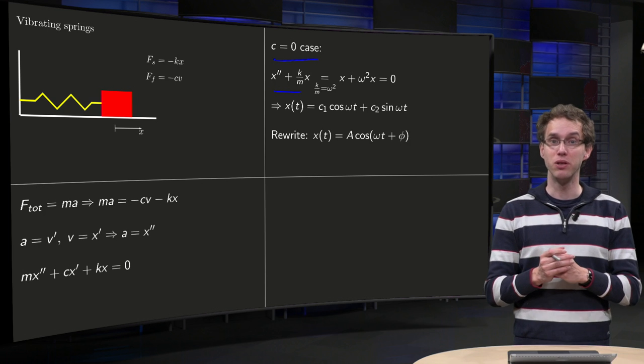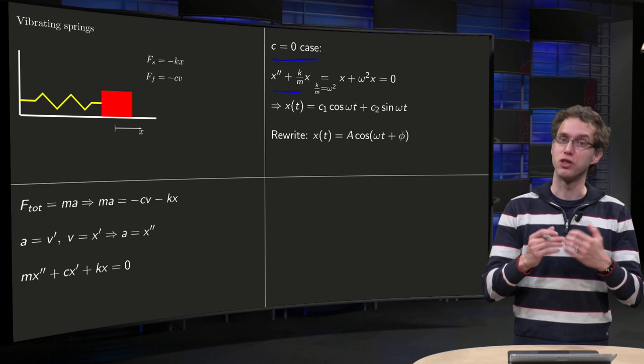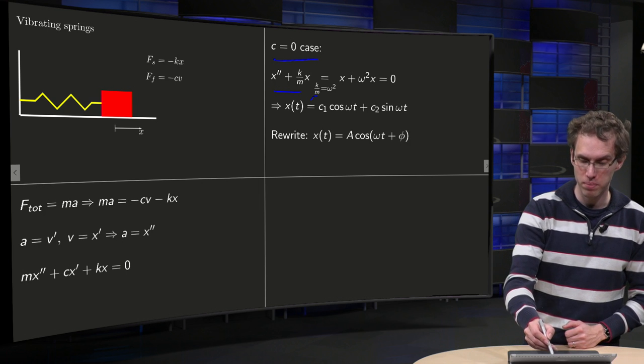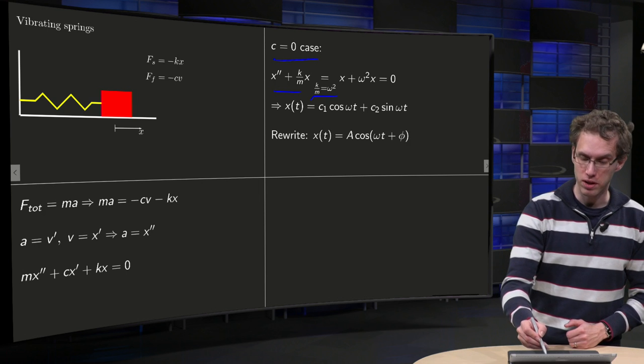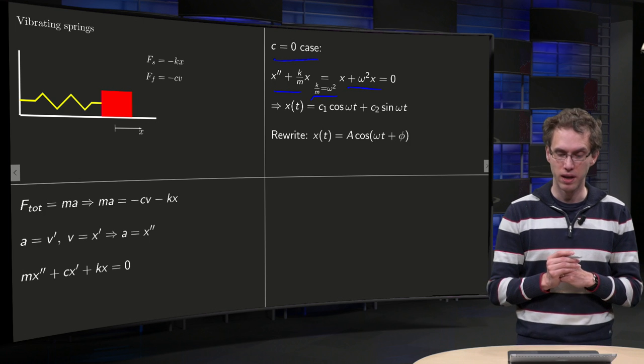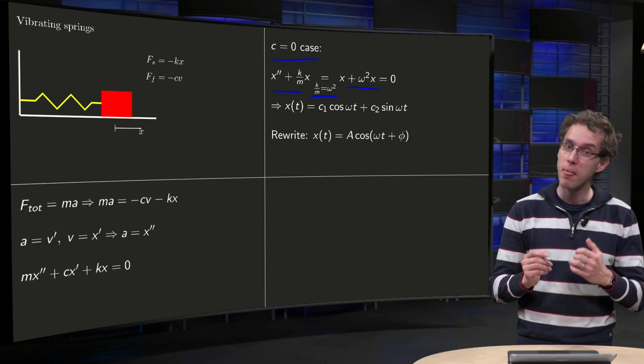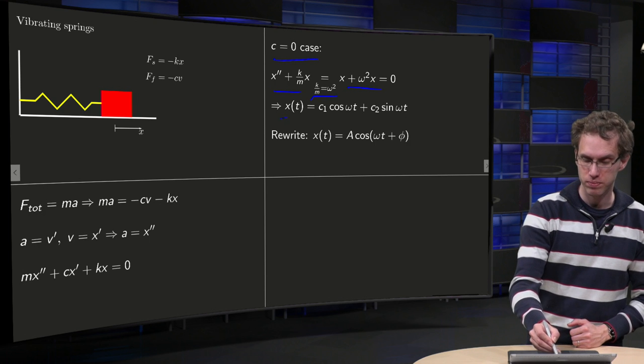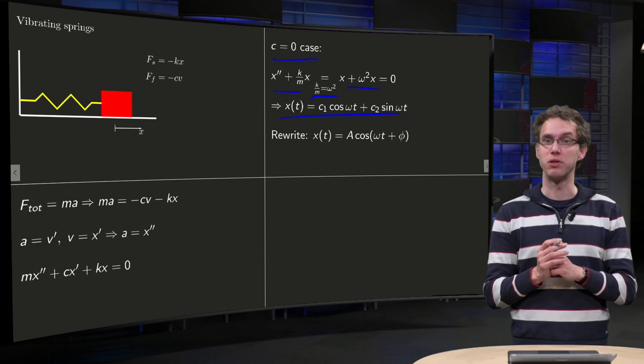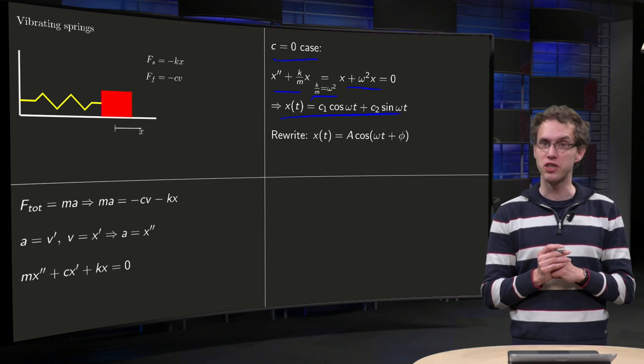We define a new constant, omega equals the square root of k over m, so omega squared equals k over m, so we get x double prime plus omega squared times x equals zero, and we can solve for x.